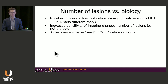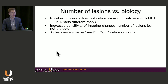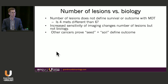Is it the number of lesions that matter, or is it the underlying biology? I do agree with Sean entirely. Number of lesions does not define survival or outcome with metastasis-directed therapy. Simply put, is a patient with four metastases by PSMA PET any different than a patient with six? The answer is likely no. As our imaging has increased sensitivity, it's going to change the number of lesions, but it doesn't change anything about the underlying disease biology.